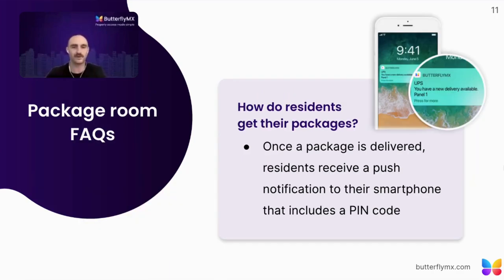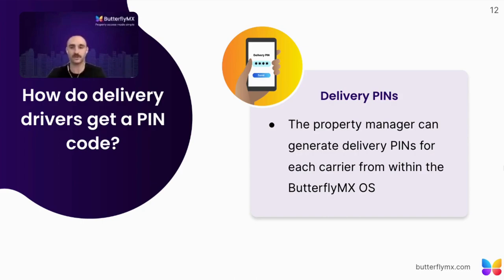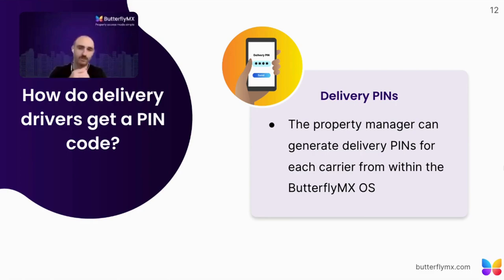First FAQ: how do residents actually receive their package? When dropping off a package, the delivery person will select on the intercom screen who they're dropping the package off for. This will alert the appropriate tenant, and they'll receive a PIN code they can use to access the package room, unlock the door, and pick up their package. Another question: how do delivery drivers get a PIN code? The ButterflyMX OS makes it simple for property managers to manage access to the delivery room — they can create and share PIN codes for delivery drivers. Because it's software-based, the property manager can create separate pins for different delivery services, whether for FedEx, UPS, Amazon, or simply set up a general pin for the delivery room, giving better visibility into who's dropping off packages and which codes they're using.